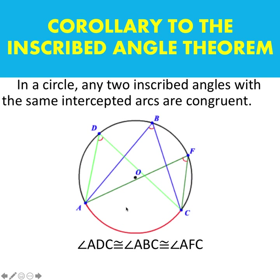A corollary to this inscribed angle theorem states: when two or more inscribed angles share the same intercepted arc — for example, inscribed angle ADC, angle ABC, and angle AFC all sharing intercepted arc AC — then angle ADC is congruent to angle ABC, which is congruent to angle AFC, because all three inscribed angles are subtended by the same arc AC.